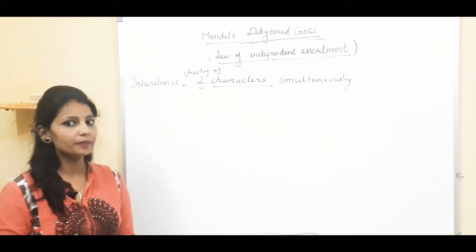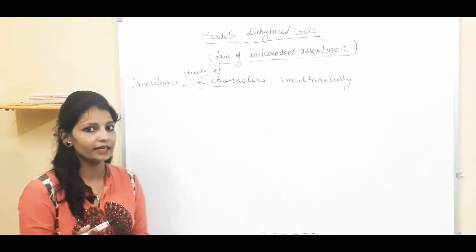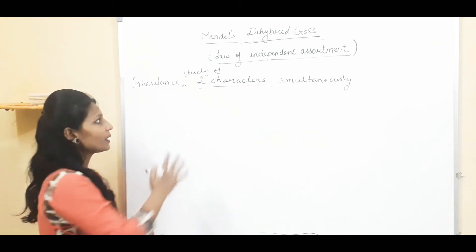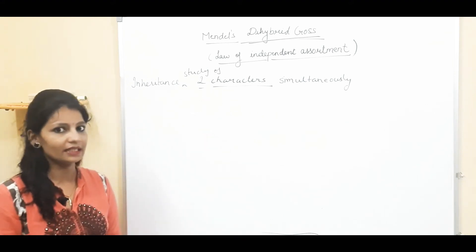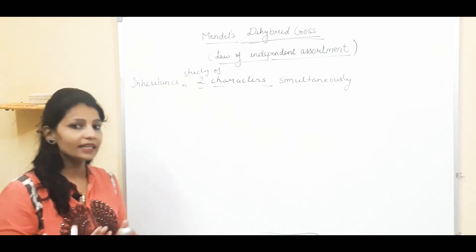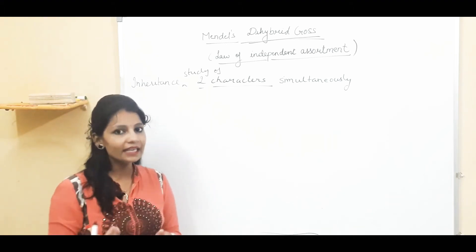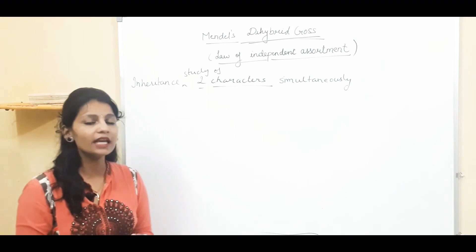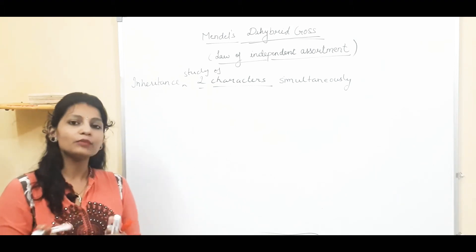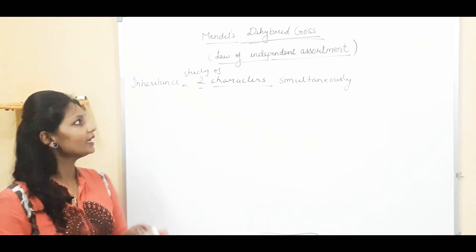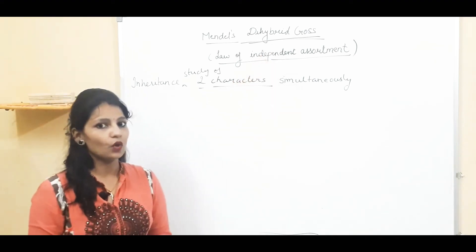In monohybrid cross, we studied the inheritance of only one character. In dihybrid cross, we have to study two characters simultaneously. For example, if we are taking two plants, we are seeing how height is inherited and also how the flower color is inherited. So if we are doing both characters simultaneously, that is what we do in dihybrid cross.